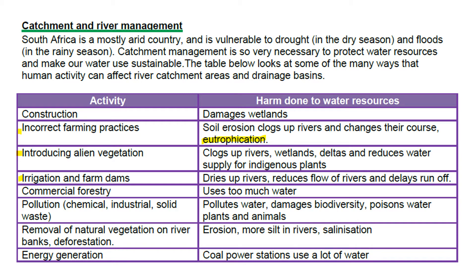Irrigation and farm dams is pretty much overuse of the water resources. Our own Ebenezer dam is very low, and this has got to do with farming and irrigation in the area. Commercial forestry, as a rule, uses non-indigenous trees and these do use more water. Pollution in all its horrible shapes and forms speaks for itself — it does the damage.